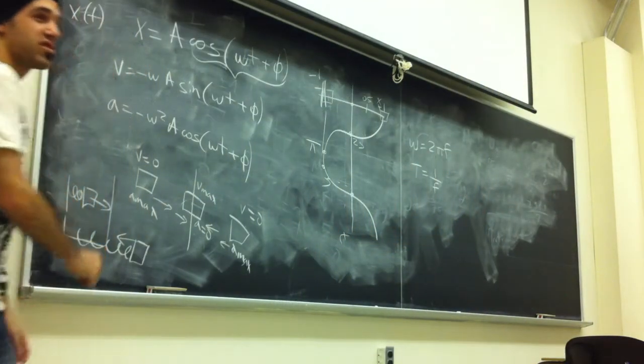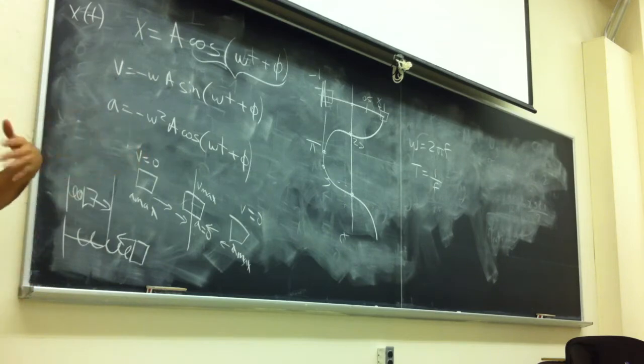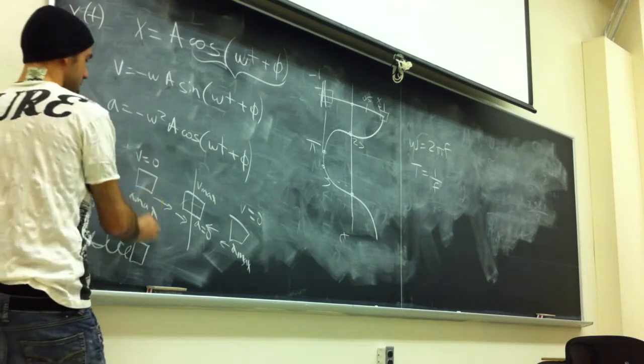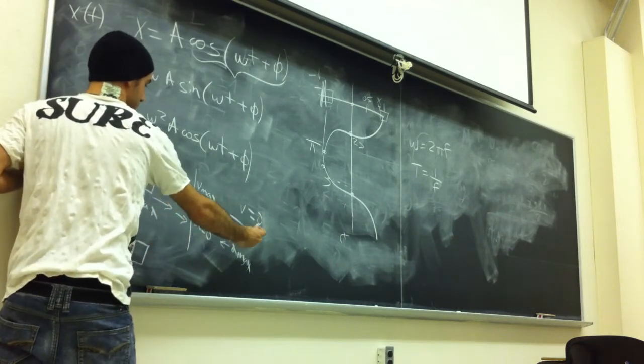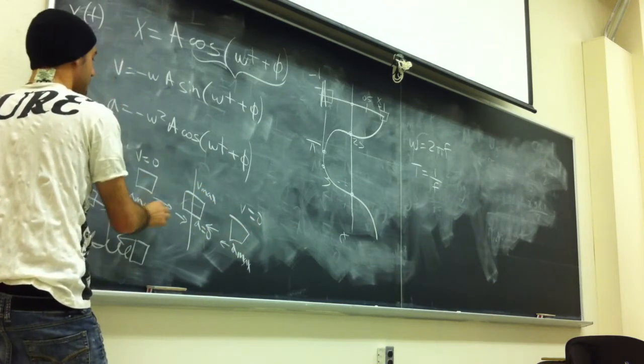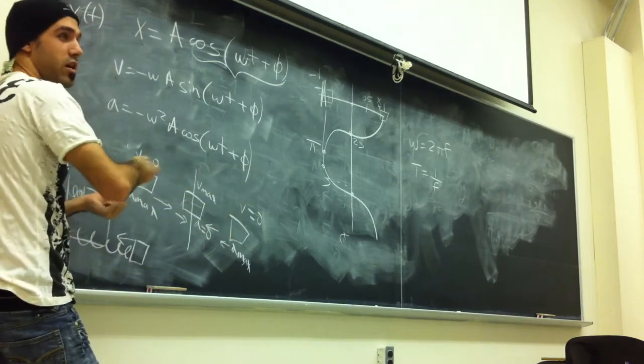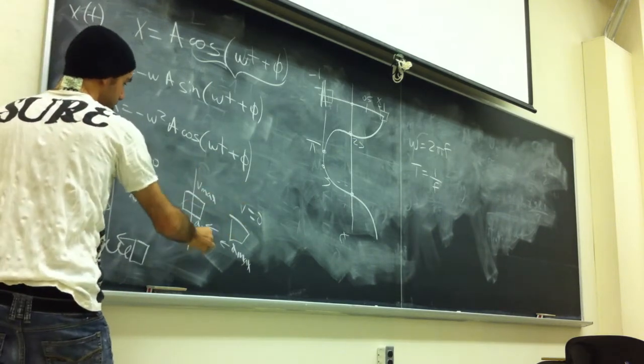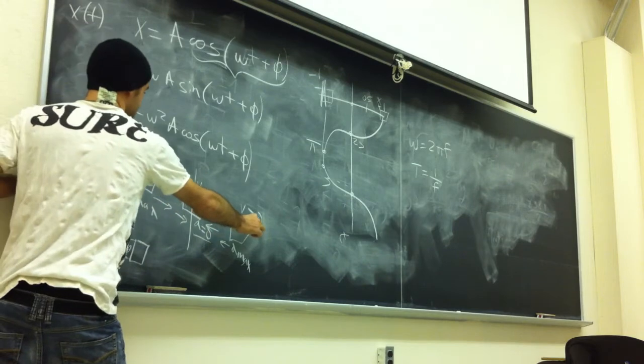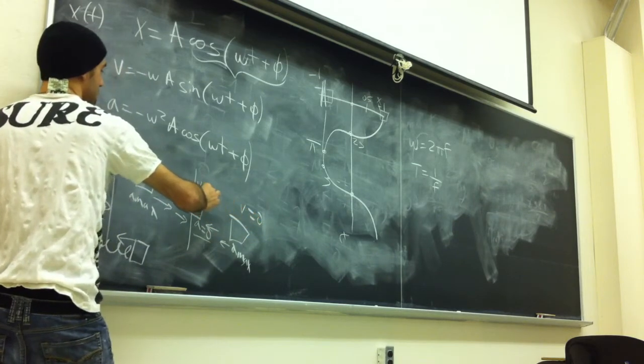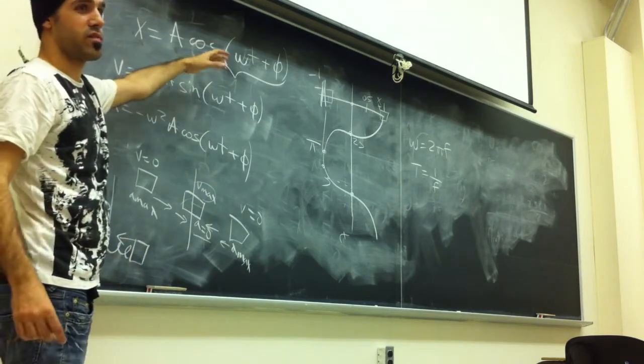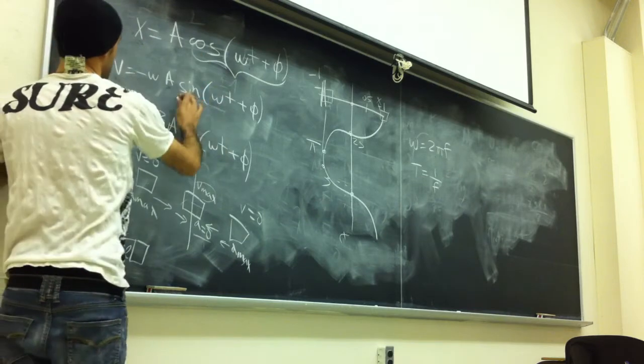For whoever is watching this and missed the first part, all we said was that the velocity is zero at the ends because the box reaches its maximum position and has to turn around. The acceleration is maximum because the spring is pulling or pushing on the box the hardest. At the center, the spring is unstressed or uncompressed, so the acceleration is zero. But because the box has been accelerating for the longest time, that's when the velocity is maximum.